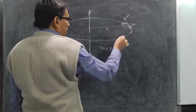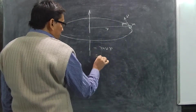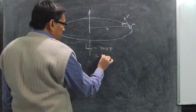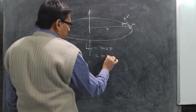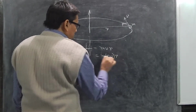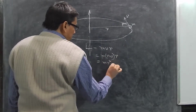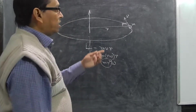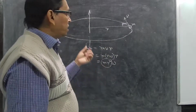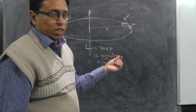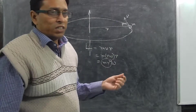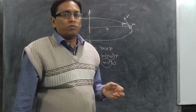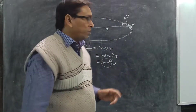Since v = rω, we can write the angular momentum as L = mvr = m·(rω)·r = mr²ω. So the quantity mr² is the moment of inertia of this particle. When a particle rotates in a circular path, its moment of inertia is mr² — the same as that of a ring of radius r. This is very important for numerical calculations.